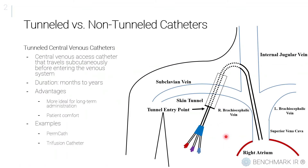Now, tunneled central venous catheters are catheters that travel subcutaneously through a skin tunnel before entering the venous system. You'll have an incision in the skin down in the chest area, then tunnel through and place the catheter — the dotted line in the diagram represents the tunneled or subcutaneous portion. It's not traveling through any vascular structure, then it enters the vein and travels all the way to terminate in the central venous system at the cavoatrial junction of the SVC and right atrium. When tunneled, they can be used for much longer periods — months to years — and are usually more comfortable for patients. Examples include a perm cath for dialysis or plasmapheresis, or a trifusion catheter with three ports to give three different medications at once.